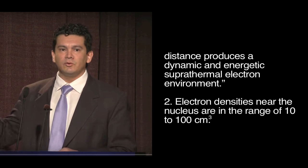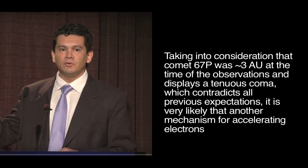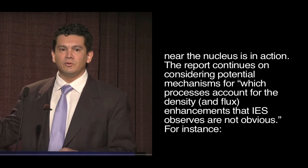2. Electron densities near the nucleus are in a range of 10 to 100 per cubic centimeter. Taking into consideration that Comet 67P was approximately 3 astronomical units at the time of the observations and displayed a tenuous coma, which contradicts all previous expectations. It is very likely that another mechanism for accelerating electrons near the nucleus is in action.